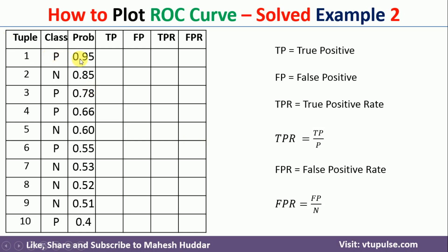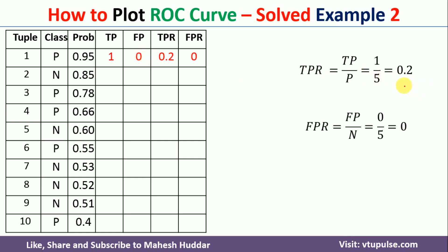Taking the first example: the actual class is positive and we assume 0.95 is the threshold. Anything greater than or equal to 0.95 will be classified as positive, and everything else as negative. This is the only example with probability 0.95, so it is classified as positive. Since actual class is positive and it is classified as positive, true positive becomes 1 and false positive becomes 0. Therefore, TPR equals 1/5 = 0.2 and FPR equals 0/5 = 0.